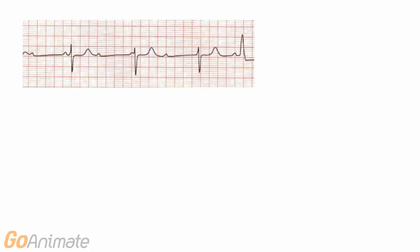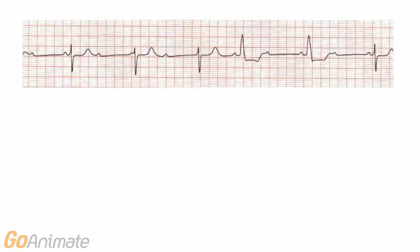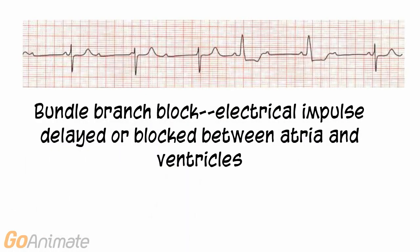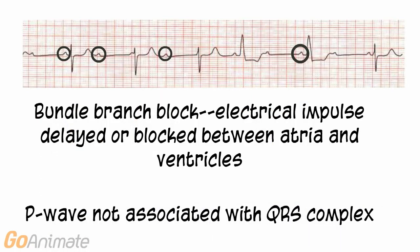In a bundle branch block, the electrical impulse is delayed or blocked between the atria and ventricles. There are different types of blocks, but in this one — a third degree block — the P wave is not associated with the QRS complex.